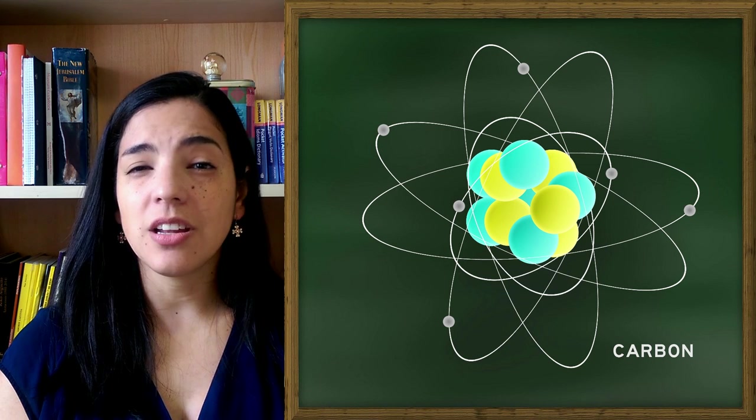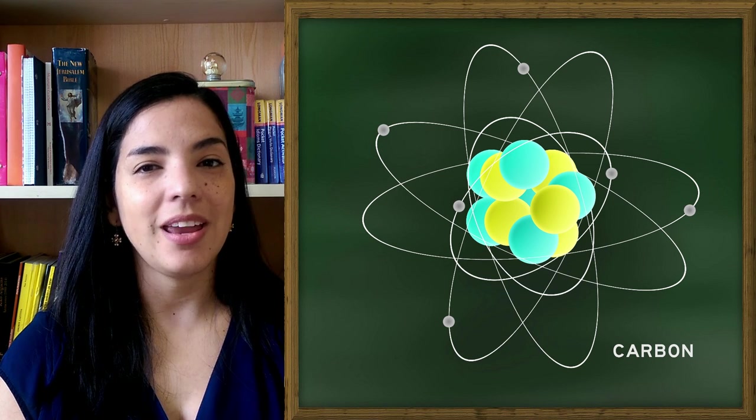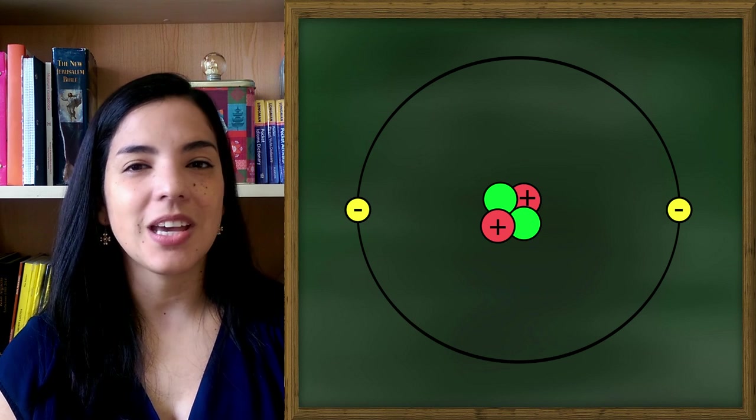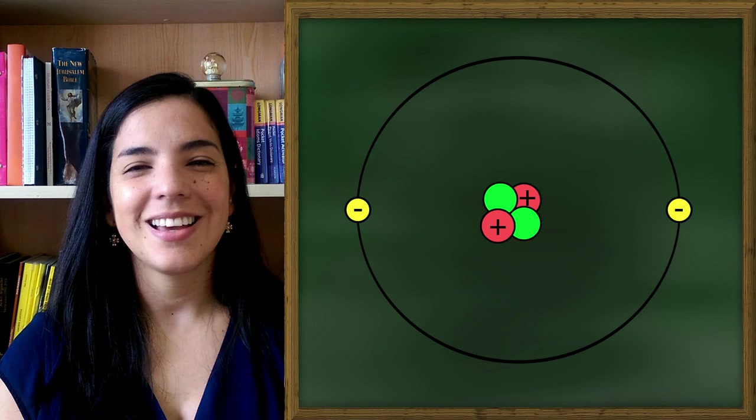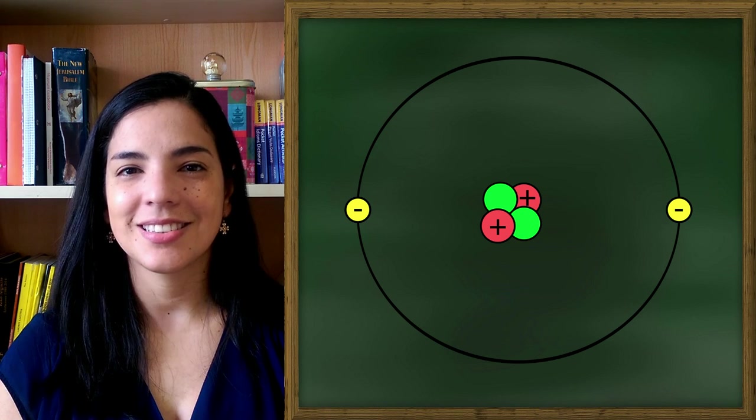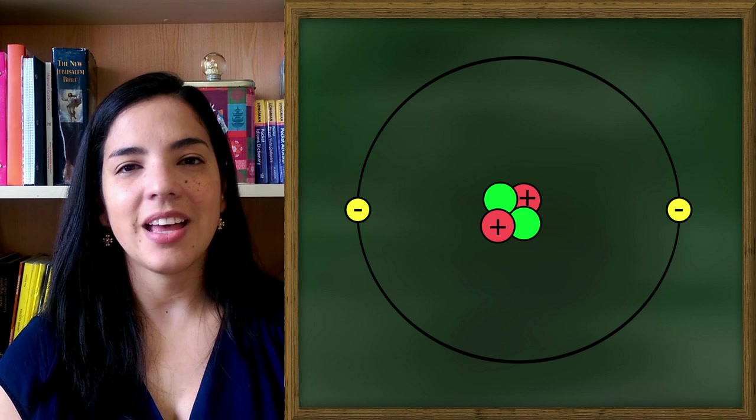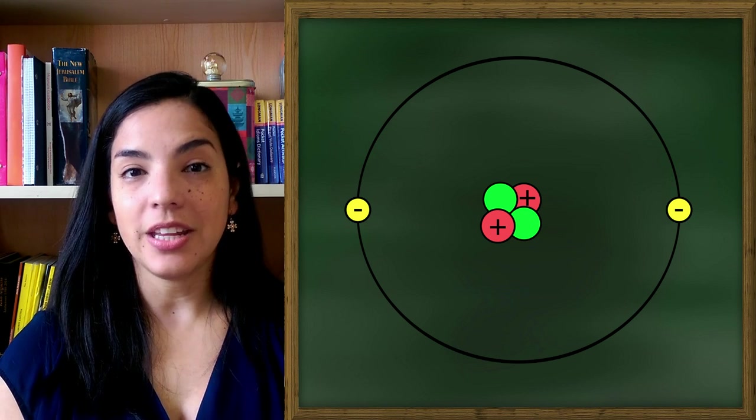But this is the lesson today. Here you have the atom. The atom is a nucleus that is formed by protons and neutrons. And around it, we have the electrons. And then you have it, an atom.